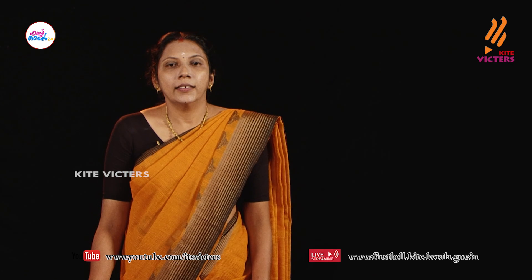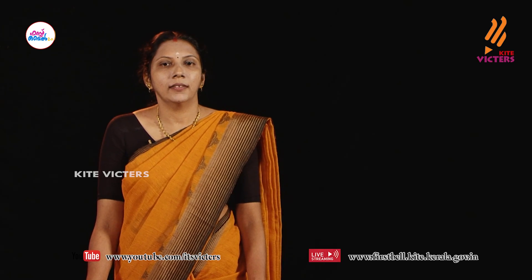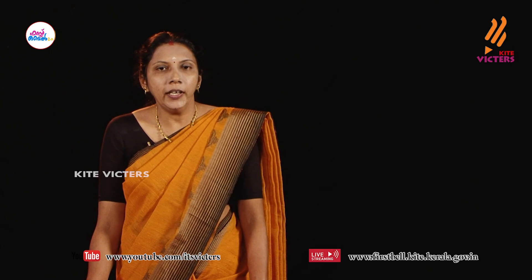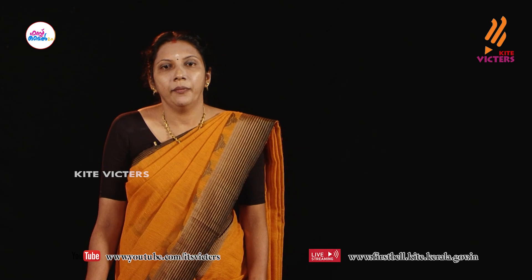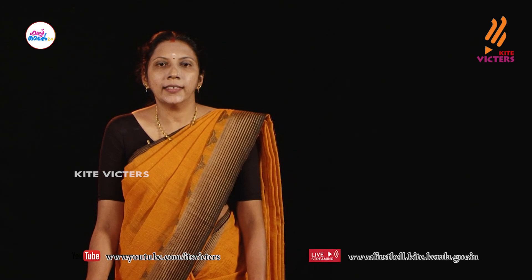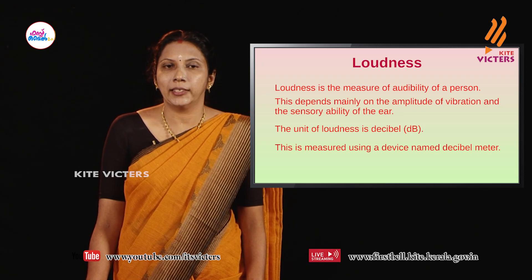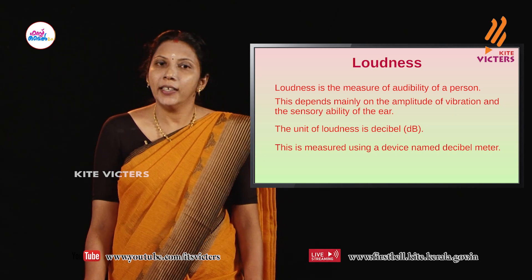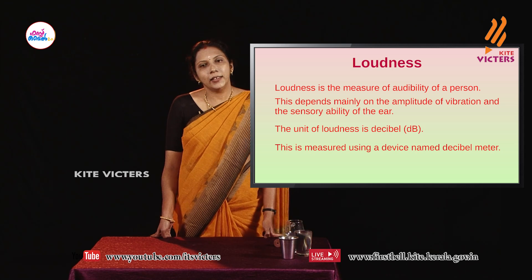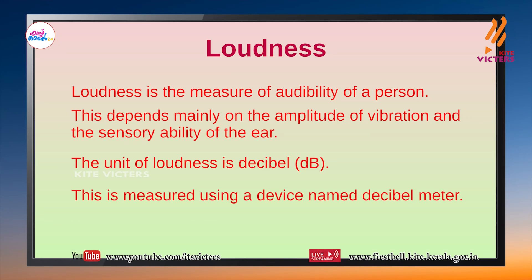We would have noticed that the sound produced from a chenda and a madalam varies. If we beat a chenda slowly, we can hear a low voice, and if we tap it hard, we can hear a loud noise. These differences are due to a property called loudness. Loudness is the measure of audibility of a person. It depends mainly on the amplitude of vibration and the sensory ability of the ear. The unit of loudness is decibel, symbol dB.